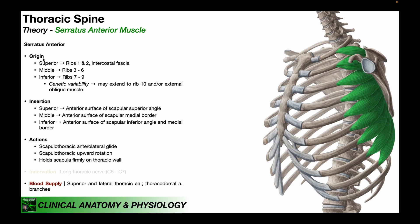The origin of serratus anterior depends on which heads we're talking about. Looking at the superior heads, there are actually three of them — head one, head two, and head three. These originate on ribs one and two and the intercostal fascia: this one has its origin on rib one, and these two heads have their origin on rib two. They insert on the anterior surface of the scapular superior angle.